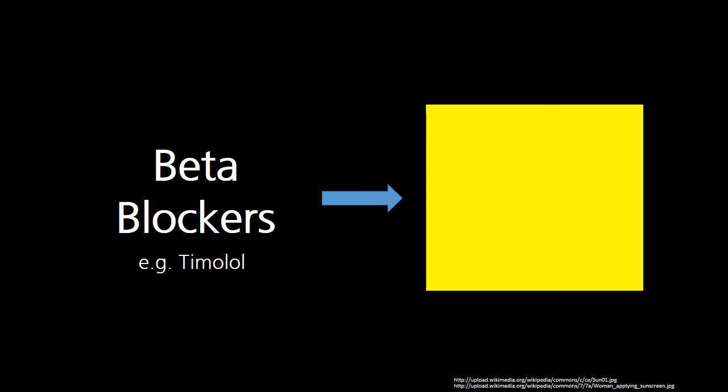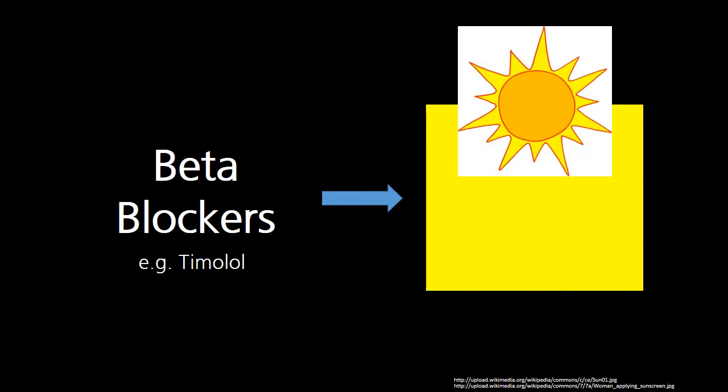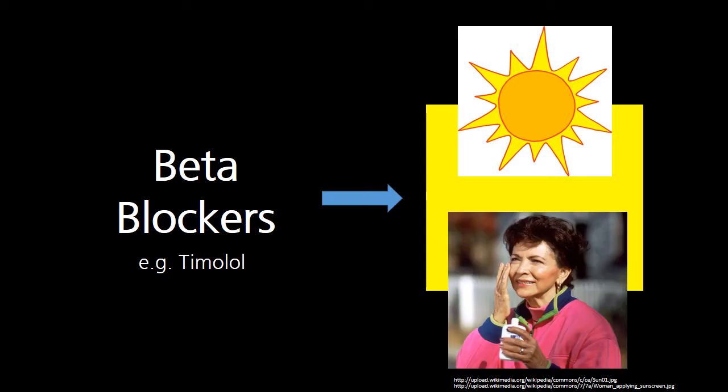First class we'll talk about are the beta blockers. True beta blockers like Timolol, those will have yellow caps. And the way I think about this is in thinking about the sun, often portrayed as bright and yellow, and you need some block if you're going to be out in it. Thus, beta blockers should equivocate with yellow.